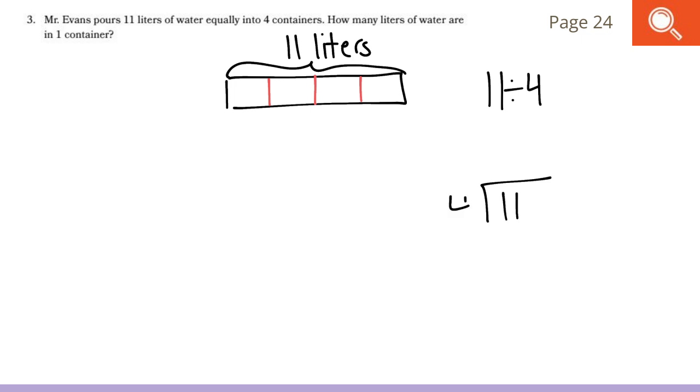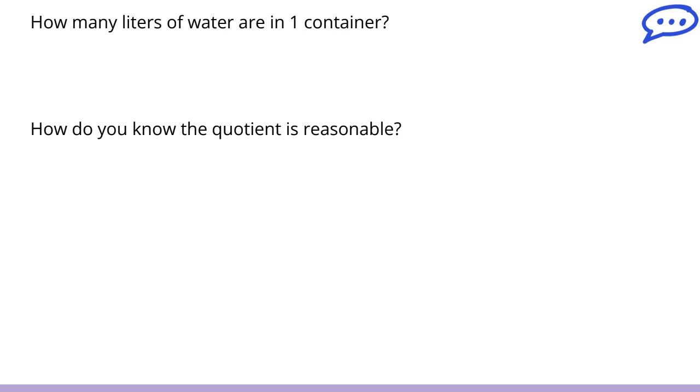This would be in between 2 and 3, because I know that if I give each container 2 liters, I gave away 8 liters, I'm left with 3 liters, which means 3 liters divided into 4 groups would be 3 fourths. That amount is in between 2 and 3 wholes.